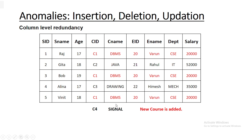In another example, suppose you add a sixth student with name and age, and that student has taken a DBMS course. Again, c_id, c_name, e_id, e_name, department, and salary — all those columns will be repeated for that student. Likewise, you are increasing the redundancy in your database. Our main focus is to reduce redundancy, not to increase it. This is the insertion anomaly.